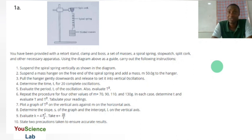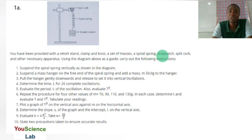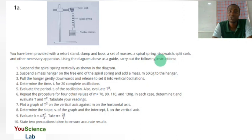From what we have here, the practical is going to be very easy. So let's start by reading the question. You have been provided with a retort stand, clamp and boss, a set of masses, a spiral spring, stop watch, split cock, and other necessary apparatus.